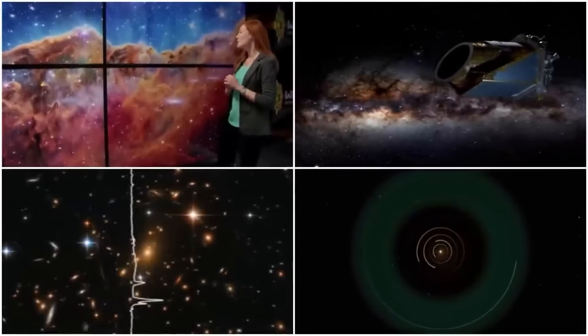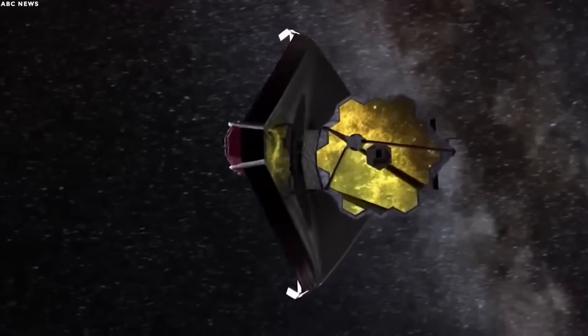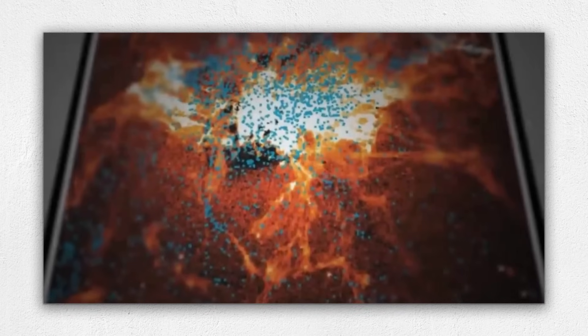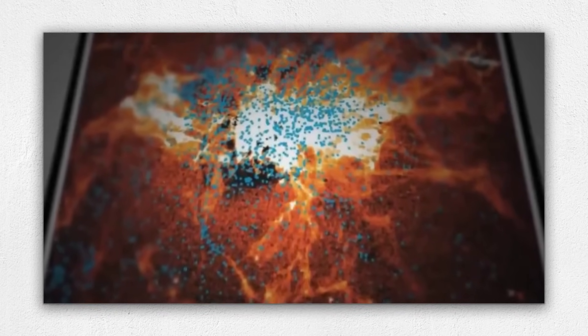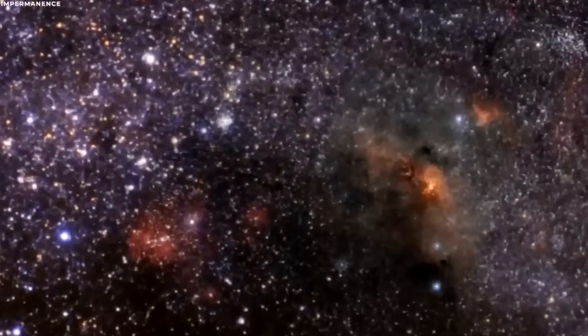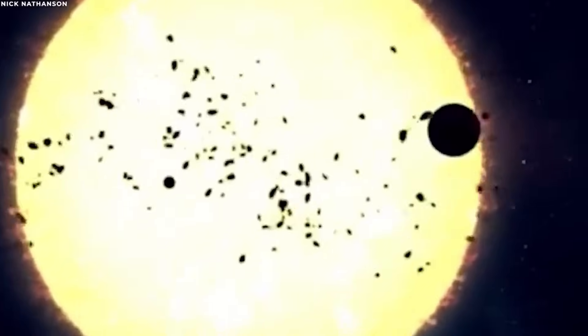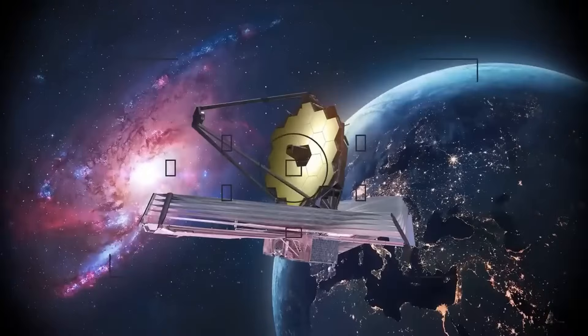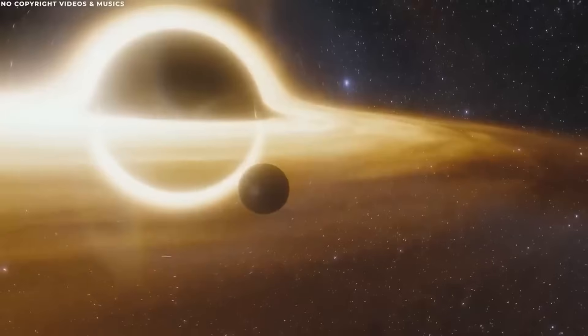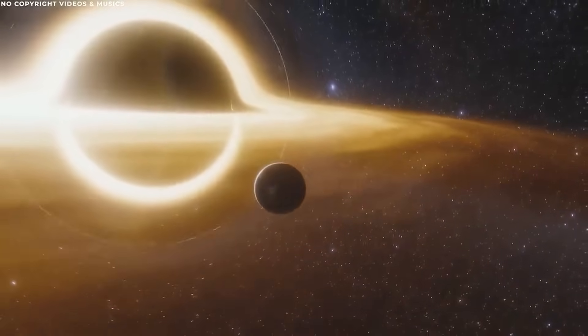The James Webb Space Telescope's revelations about time have also ignited discussions within the field of astrophysical and cosmological simulations. Scientists use computer simulations to model the behavior of celestial objects, galaxies, and even the entire universe over vast timescales. These simulations rely heavily on our current understanding of time and space. The anomalies observed by the JWST raise questions about whether existing simulation models accurately represent the complexity of the cosmos.